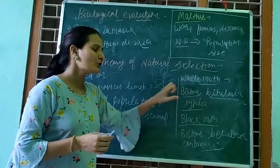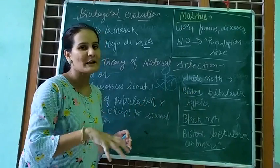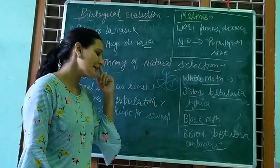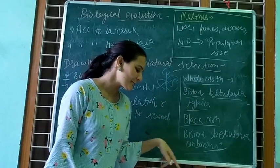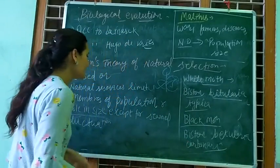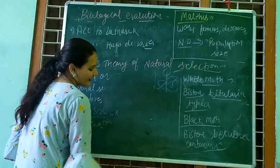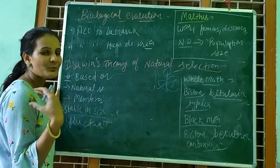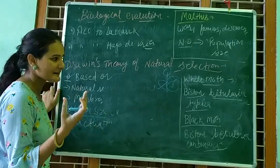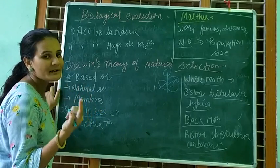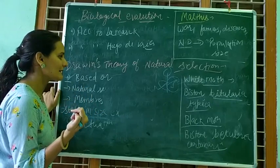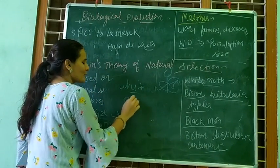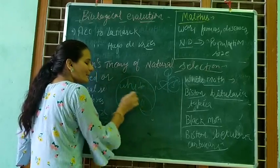When the trees became black due to pollution, the white moth became easily visible to predators and was easily captured. But black moths — Biston betularia carbonaria — blended with the dark trees. So the predator could not easily catch the black moth. There was a mixed population of white moths and black moths.